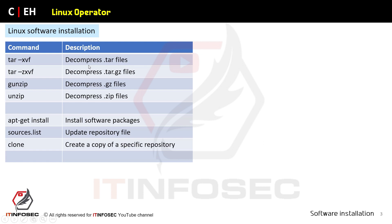After covering compressed files we will discuss apt-get install for installing software packages, and then sources.list, which is the update repository file. I will discuss what it is and how we can use it. Beside these commands we will also use the clone command. After this slide I have some extra exciting items that I ensure will be useful for you.